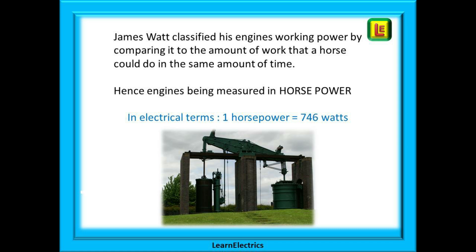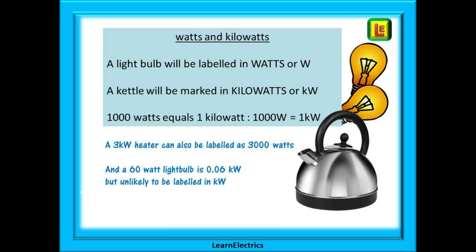Watts are used as a symbol for power, and in electrical terms one horsepower equates to 746 watts. A light bulb will be labelled in watts or W, and a kettle will be marked in kilowatts or kW. 1000 watts equals 1 kilowatt.